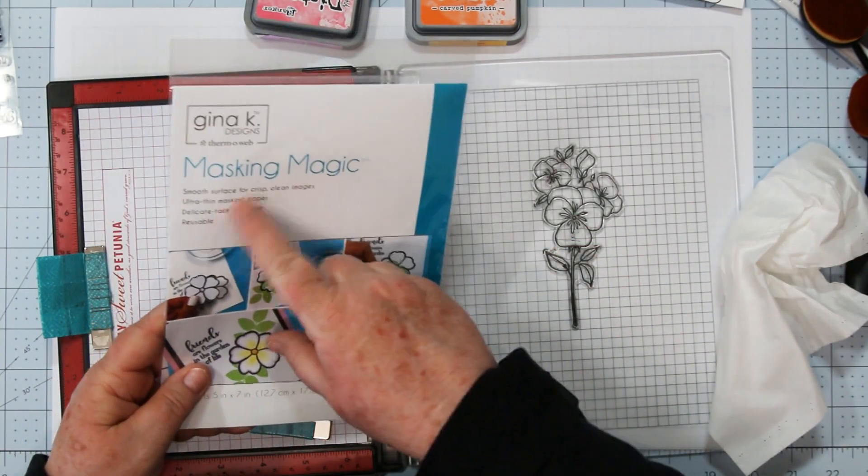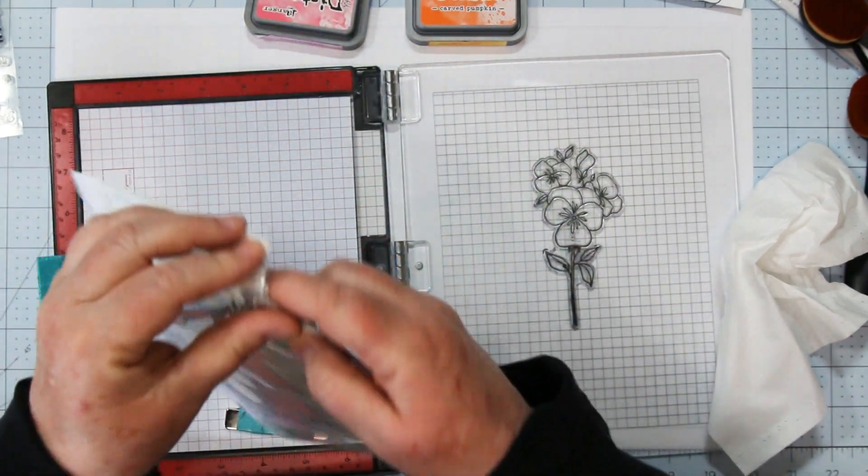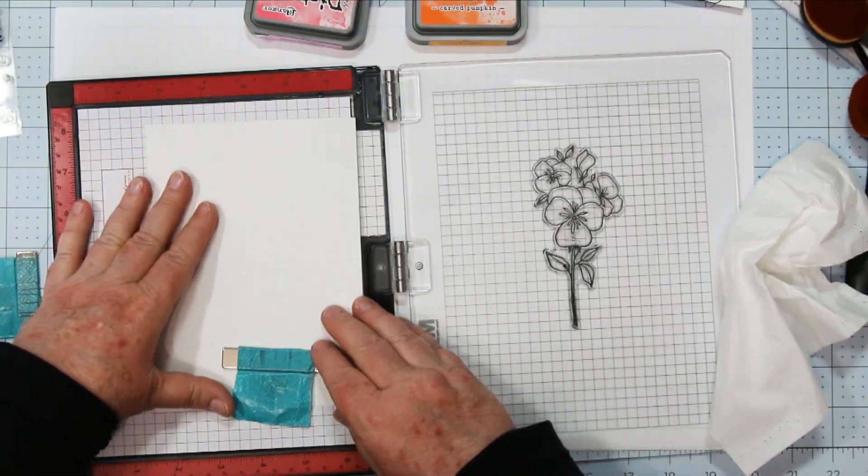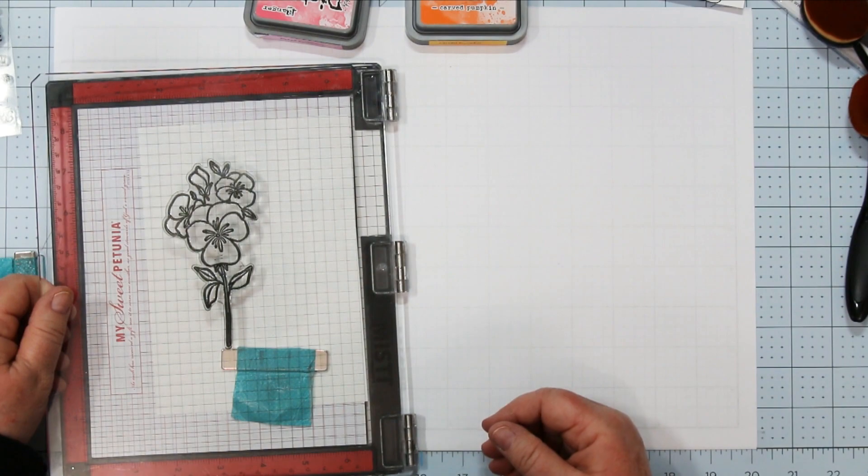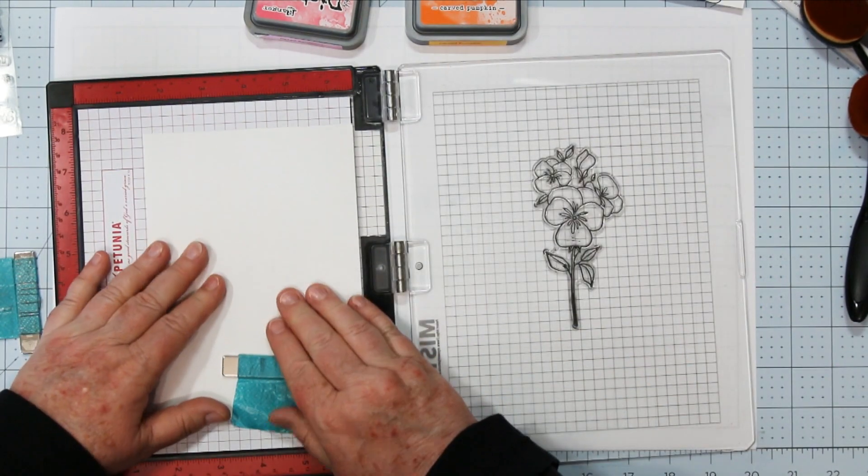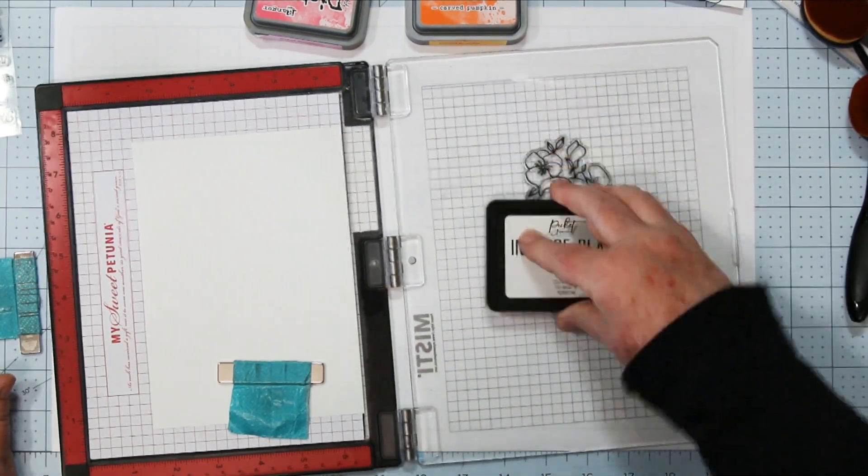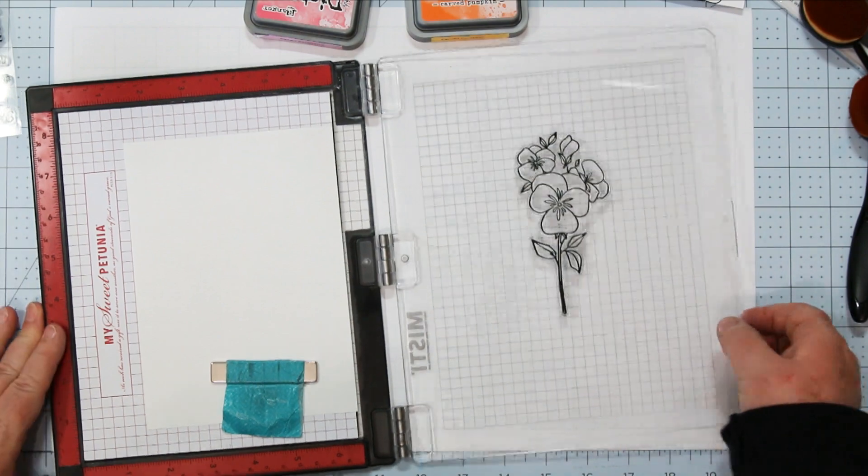Next we're going to do some masking. So I'm going to be using the Gina K Masking Magic and I'm just grabbing a sheet here and I'm going to do exactly the same thing. I'm going to stamp the image twice again in black ink. Make sure that you use a permanent ink.